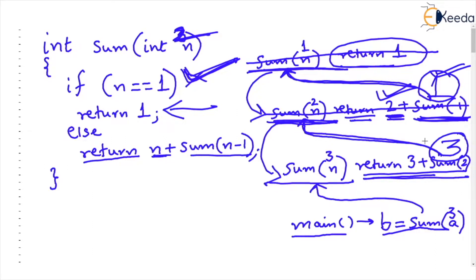So this function sum 3 will now return 3 plus 3 which is 6 and sum 3 also ends. So 6 is returned back in main and b becomes 6. Hence we have found 1 plus 2 plus 3.